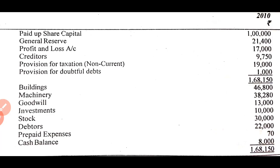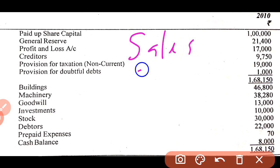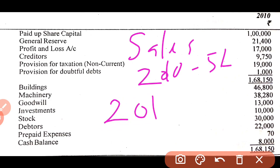Now I am giving you another question with a balance sheet for the year 2010. The items include: paid-up share capital, general reserve, profit or loss account, creditors, provision for taxation (non-current), provision for doubtful debts, building, machinery, goodwill, investments, stock, debtors, prepaid expenses, and cash balance. Additionally, sales for 2010 is rupees 5 lakhs, and it is estimated that in 2011 sales will amount to rupees 7 lakhs.